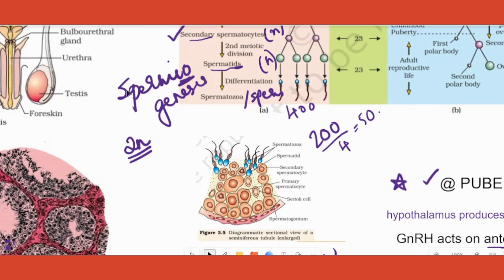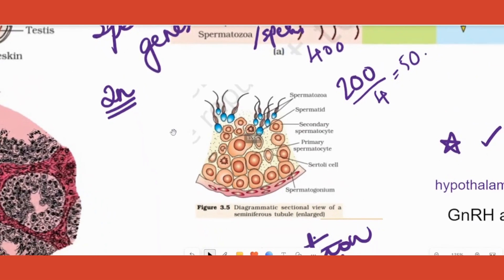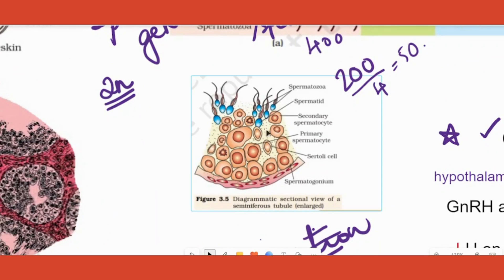Another possible question is diagram labeling: a diagram will be given with labels A, B, C, D, and you should be able to label it. The logic here: the first cell is primary spermatocyte, from there it becomes secondary spermatocyte, then it becomes spermatid, and then from spermatid to spermatozoa. Please learn this labeling as it is asked for two marks.